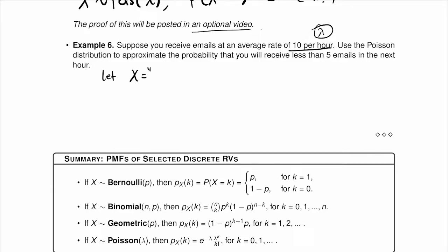Let x equal the number of emails received in the next hour. So our random variable is going to be Poisson with parameter lambda equal to 10. This 10 over here.